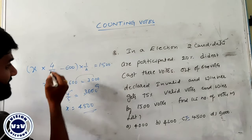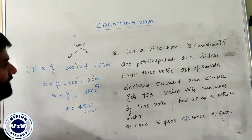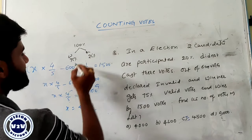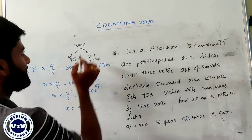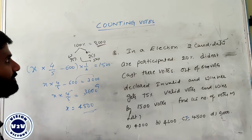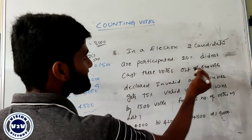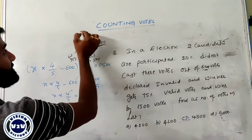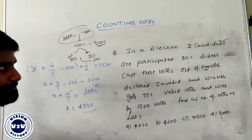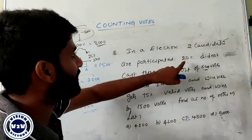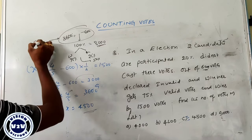We will go with the other approach. We have 100 percentage of votes distributed between winner and loser. Winner gets 75 percentage, loser gets 25 percentage, wins by 50 percentage. So 50 percentage of votes equals 1,500, then 100 percentage value becomes 3,000. We know that after subtraction of invalid votes, because there are 600 votes declared invalid, subtracting 600 gives value 3,600. These value exactly equals 3,600. And 20 percentage did not cast the vote.